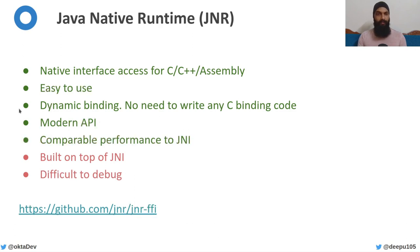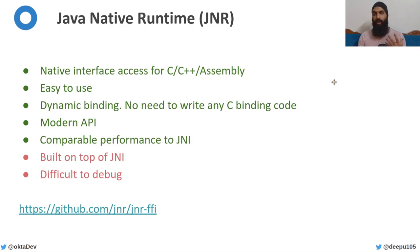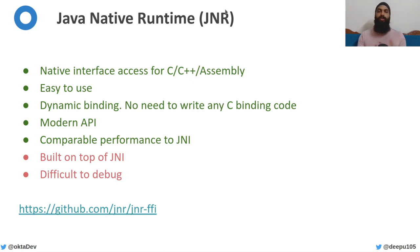Another popular option is Java Native Runtime, or JNR. Though it's not as widely used or mature as JNA, it has a much more modern API and better performance. JNR is a close second to JNI in terms of performance. It also removes the need to write C bridging code because it does dynamic binding. It has a modern API, is very easy to use, and provides similar interface access for C, C++, and assembly, but it is also difficult to debug like the other options.